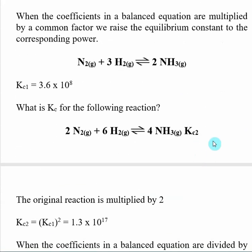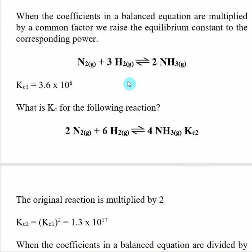Likewise, if we make similar changes — here I still have my original reaction, KC1 — what happens when I multiply through this reaction by some whole number? In this case we're going to multiply by 2, so the 3 becomes a 6, the 1 becomes a 2, the 2 becomes a 4. The rule is we take the original K value — 3.6 times 10 to the 8th — and raise that to the power of whatever number we multiply the reaction by.